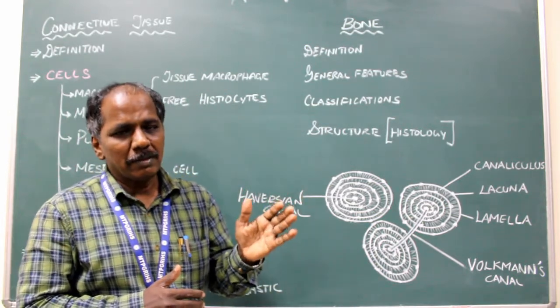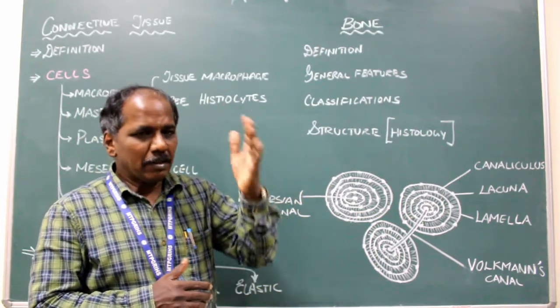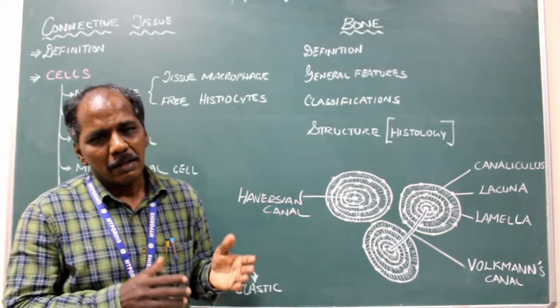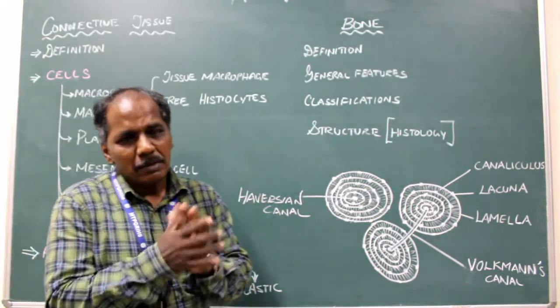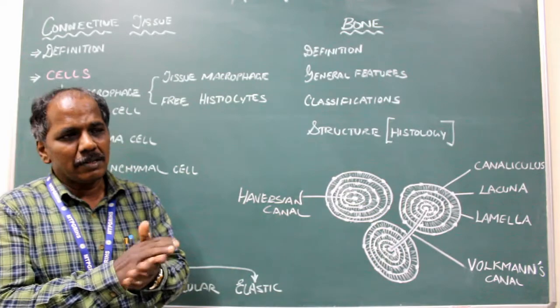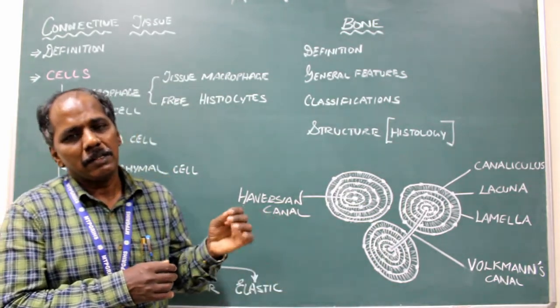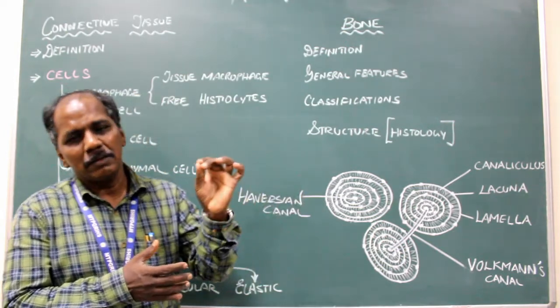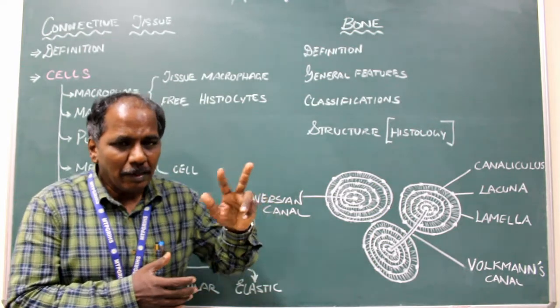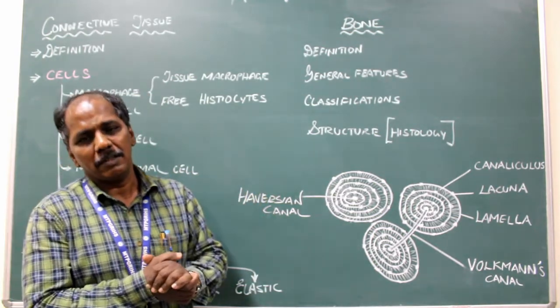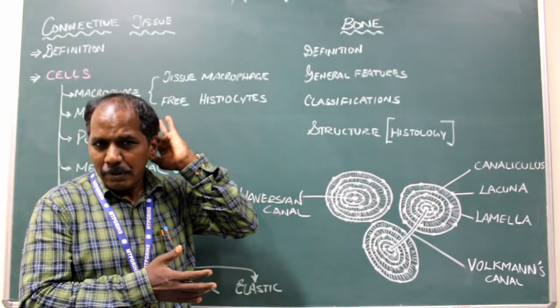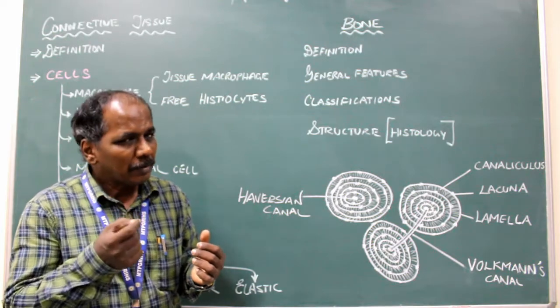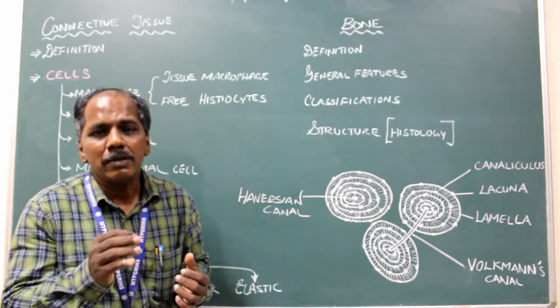Membranous bone - for example, the bones which are flat, like skull bones: frontal, parietal, temporal, occipital. These are the bones arising from membranous ossification. Cartilaginous ossification - especially the long bones will develop by cartilaginous ossification. There is another type known as membrano-cartilaginous ossification. These type of bones develop both by membranous as well as cartilaginous ossification, for example: occipital bone, clavicle, mandible, temporal bone, and sphenoid bone.